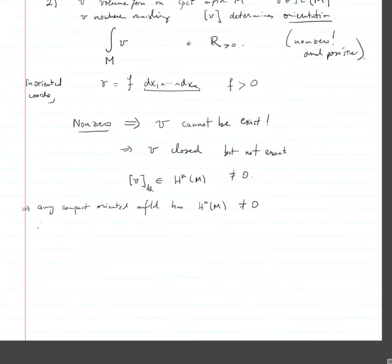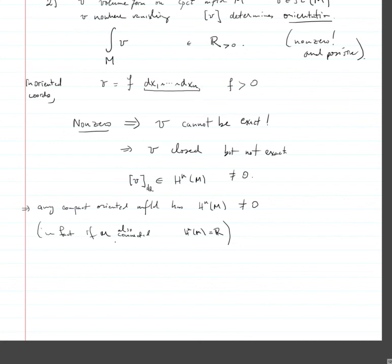In fact, if m is connected, then this cohomology group is just ℝ — it's one-dimensional. We don't quite have enough to prove that right now, but at least we know there is this one non-zero class given by the volume form. It should not be too difficult to show this is one-dimensional.